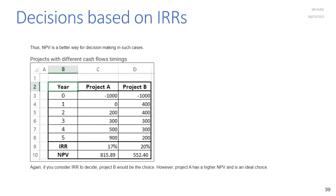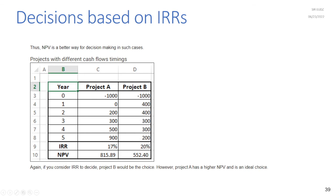Similarly for projects with different cash flow timings: if you consider IRR, Project B would be the choice, but Project A has the higher NPV and is the ideal choice.